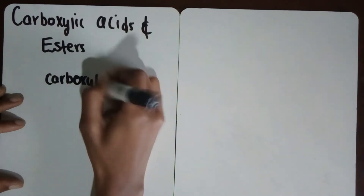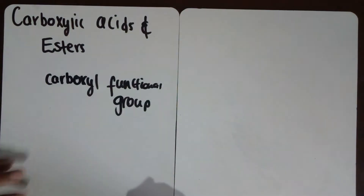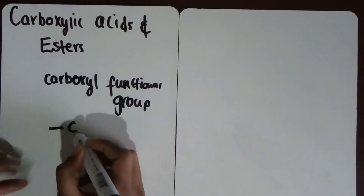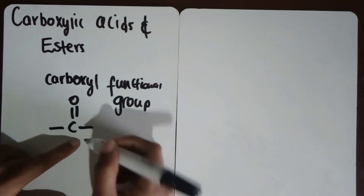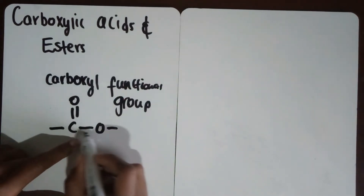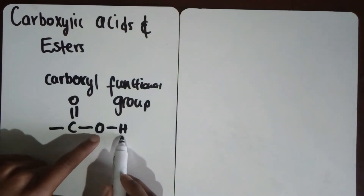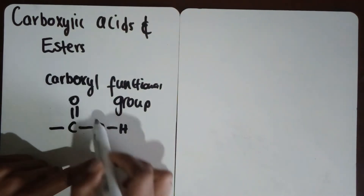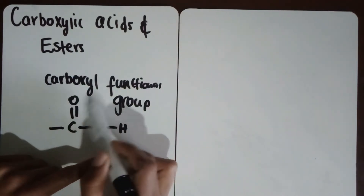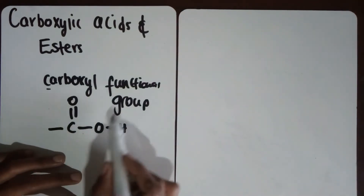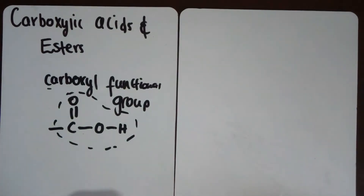They have a carboxyl functional group. What does it look like? You have a carbon which is double-bonded to oxygen, and on the other end that carbon is also bonded to oxygen via a single bond, and that oxygen is bonded to a hydrogen. So it's almost like you have a hydroxy group combined with a double bond — combined, we call it the carboxyl functional group.